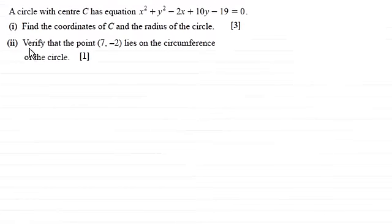Hi there. Now, in this question, we're given that a circle with centre C has equation x squared plus y squared minus 2x plus 10y minus 19 equals 0. In the first part of the question we've got to find the coordinates of C and the radius of the circle for 3 marks. And then, in part 2, we've got to verify that the point with coordinates 7 minus 2 lies on the circumference of the circle for 1 mark.